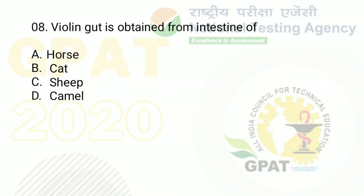The question: catgut is obtained from the intestine of. Options: A: horse, B: cat, C: sheep, and D: camel. If you are thinking cat, you are wrong. The right answer is option C — sheep.